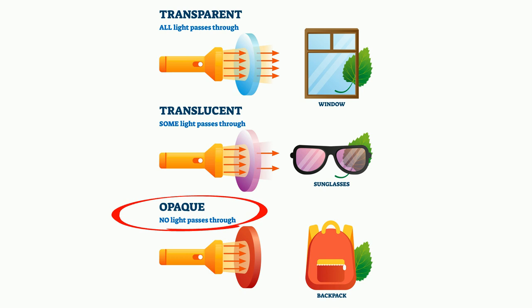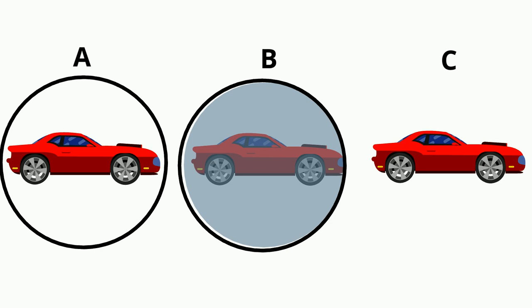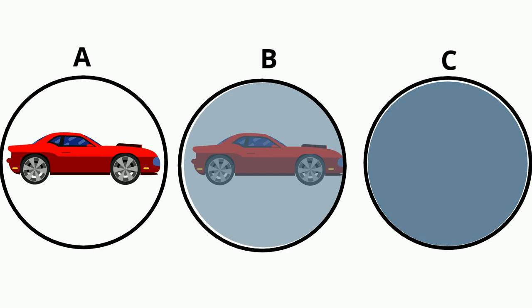The material at A is transparent and you can see the car clearly. The material at object B is translucent and the image is not clear. The material at C is opaque and you cannot see the car.